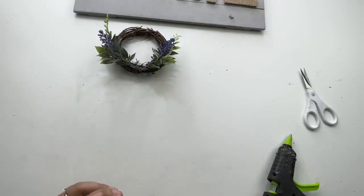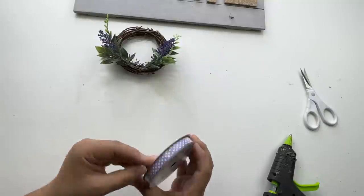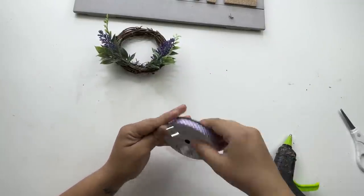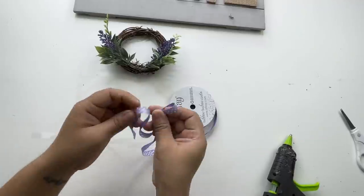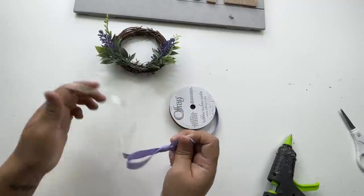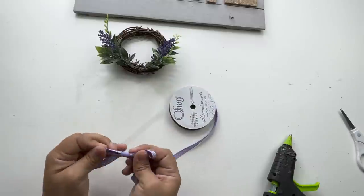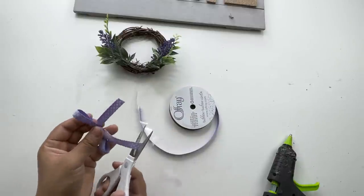To make the bow, I'm using this beautiful lavender polka dot ribbon that I got from Hobby Lobby or Walmart. I don't remember, but I did get it from either one of those stores. And I'm going to just make a small little bow and add it to the center of my wreath.